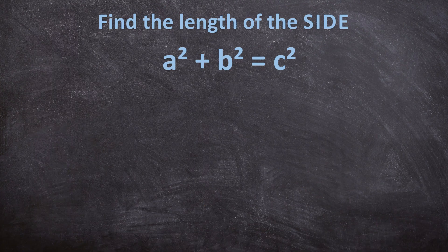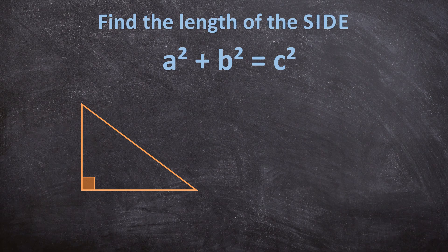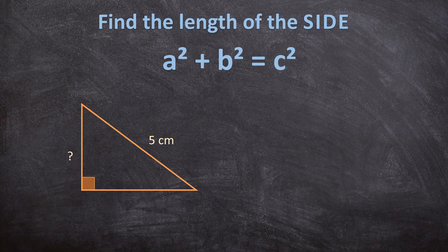First, let's draw our right triangle. We know it is a right triangle because of the small square in one of the corners. That square means the angle is 90 degrees, and we are going to use Pythagoras theorem to calculate this side length. We need the hypotenuse, which is 5 centimetres, and the other side, which is 4 centimetres.